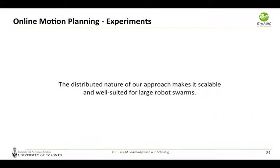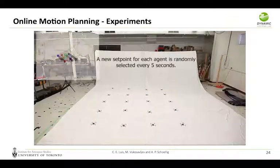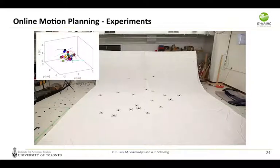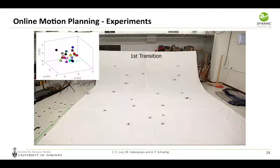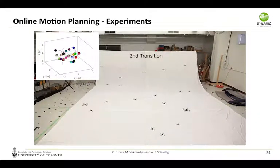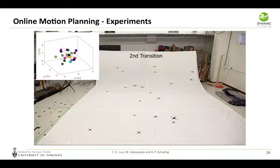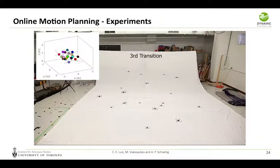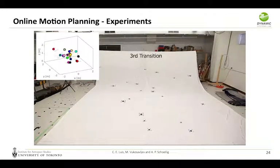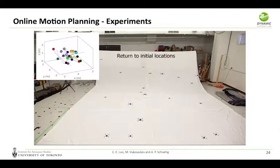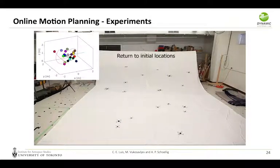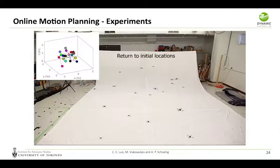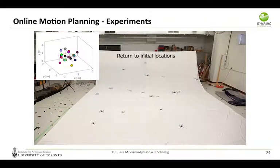We tested the scalability of our approach by performing tests with up to 20 quadrotors. In this case, we changed randomly the set points of each of the agents every five seconds. With this test, we can show that our algorithm is able to generate smooth trajectories despite the sudden change in setpoint. And even in this highly convoluted space, the agents can find trajectories that are non-colliding and smooth.